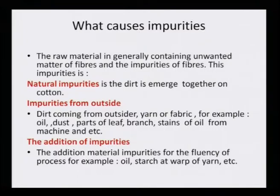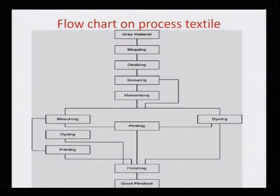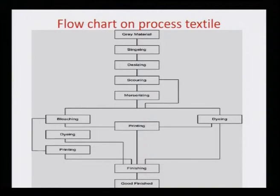Additional impurities include material impurities added during the process, like oil and starch, which are added to the yarn in order to weave them into the fabric and also need to be removed. A gray material typically goes through singeing, desizing, scouring, mercerizing, and then bleaching, after which it can go to dyeing or printing, and finally to finishing and the finished goods.